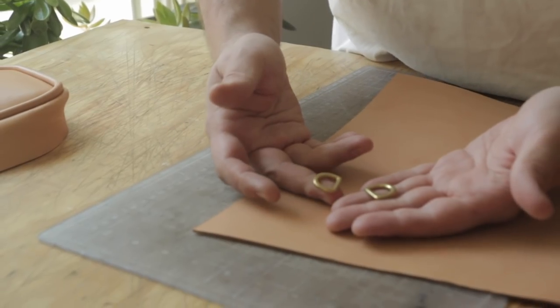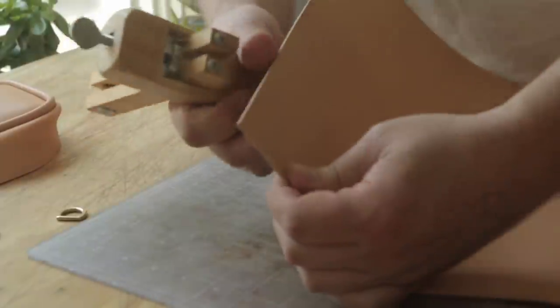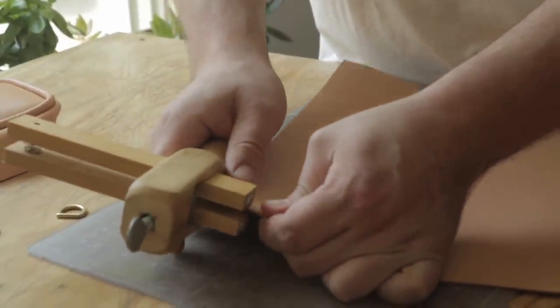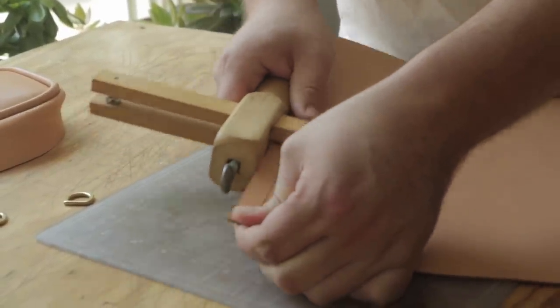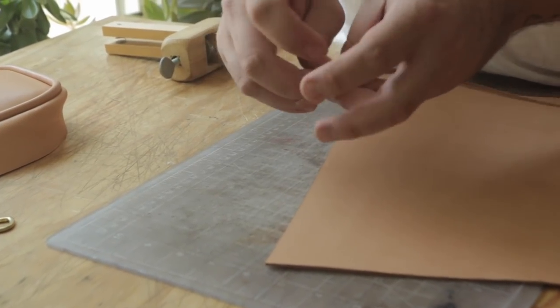So these are just little half inch d-rings. I have my strap cutter set to a half inch and this is some six ounce leather. We shouldn't need more than that because this is kind of a light duty bag.